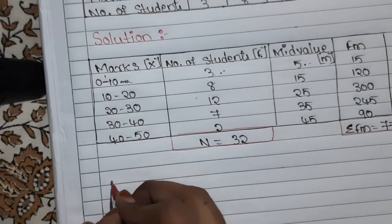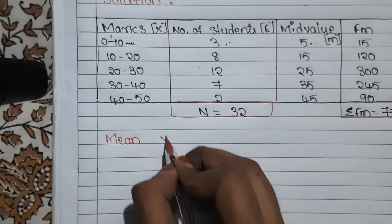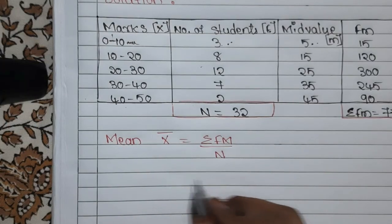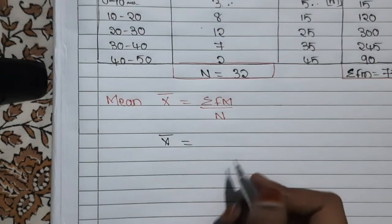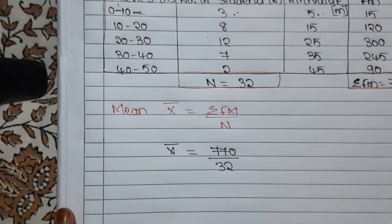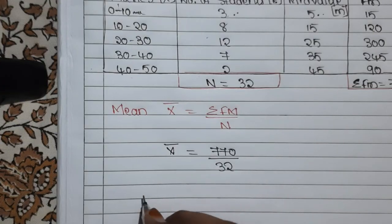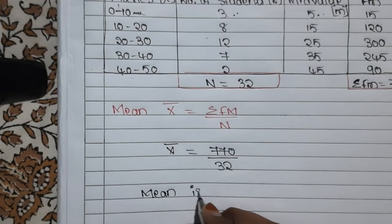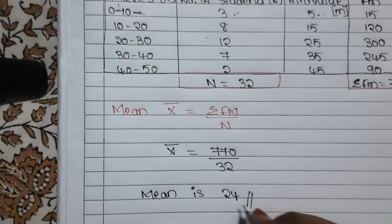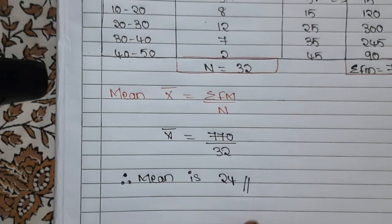Now let us calculate the mean. I'll highlight the key values with a red pen. The formula of mean is: x̄ = σfm ÷ n. Substituting: x̄ = 770 ÷ 32 = 24.0. Therefore, mean = 24.